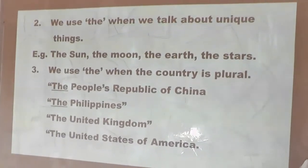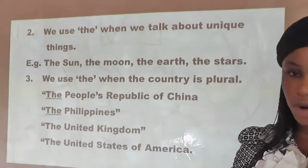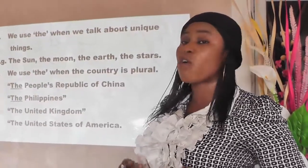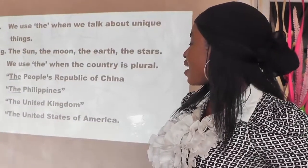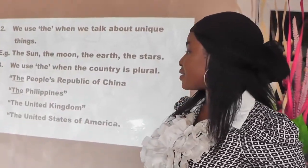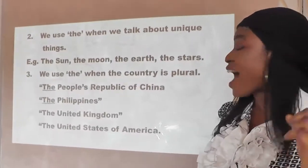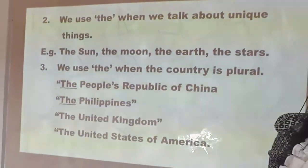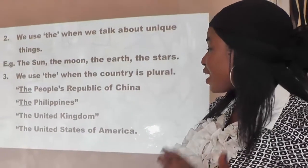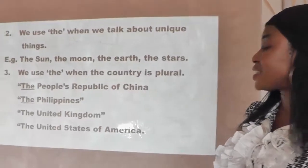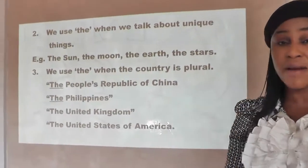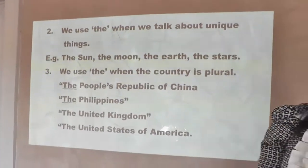The third use is when a country name is plural, we use article 'the.' For example: 'The People's Republic of China' — we're talking about people, so it is plural. 'The Philippines' — we're talking about more than one island. 'The United Kingdom' — more than one country. 'The United States of America' — referring to more than one state.